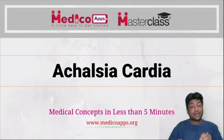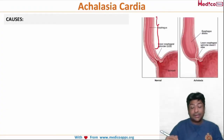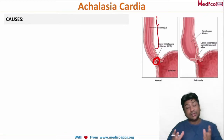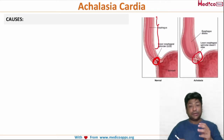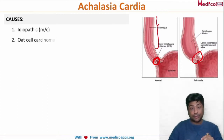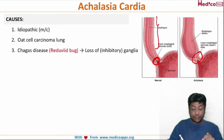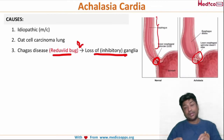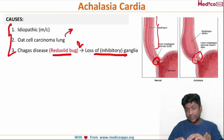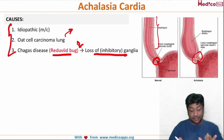Let us discuss achalasia cardia. This is a pathology of tone — rather than the entire esophagus, only the lower esophageal sphincter tone is basically increased. In diffuse esophageal spasm the entire esophagus tone was increased; here only the lower esophageal sphincter tone will be increased. The most common cause is idiopathic, but two very important causes asked in examinations are: oat cell carcinoma of the lung, and Chagas disease — where there is destruction of the inhibitory ganglia, caused by the reduviid bug.